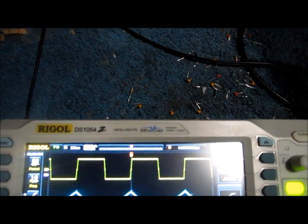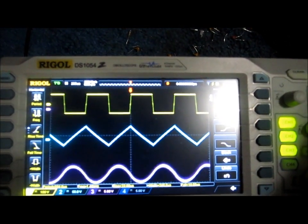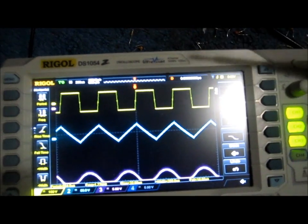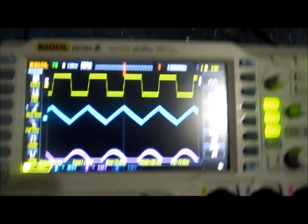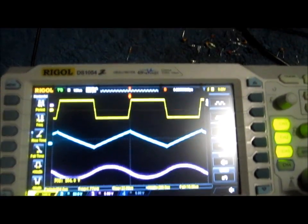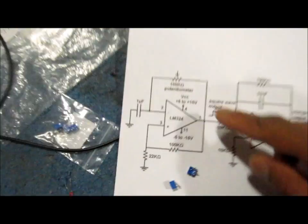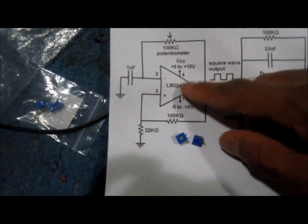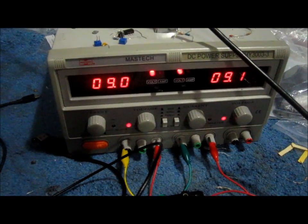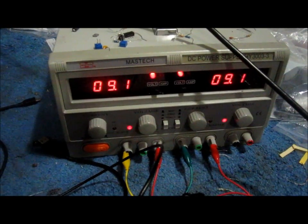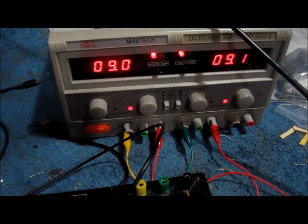We're able to get pretty good frequency variation through this 100k potentiometer. This circuit is hooked up to a DC power supply. The LM324 requires positive and negative voltage, so I'm feeding it nine volts to both the positive and negative voltage terminals of the chip.